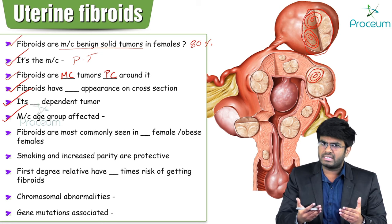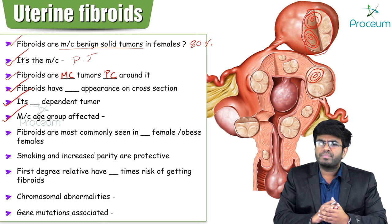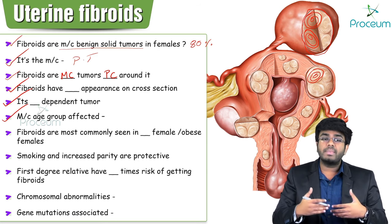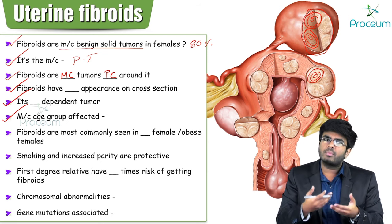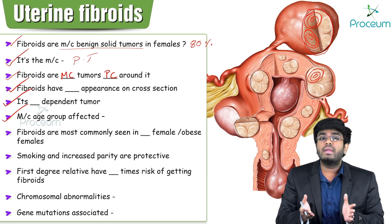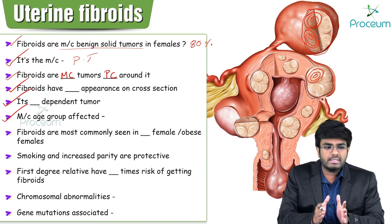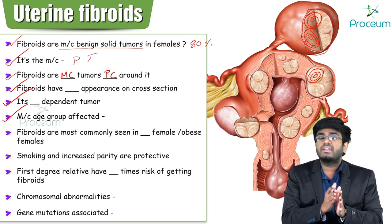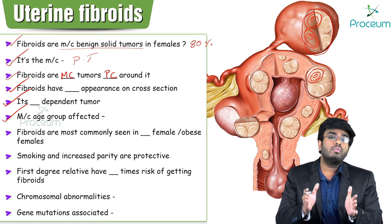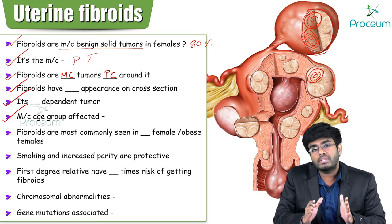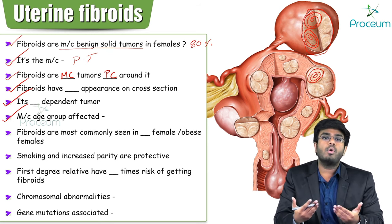If a female marries around age 25–26 but doesn't conceive for 10 years, by age 36 the uterus starts making its own baby. So if nothing is growing inside the uterus, the uterus makes its own baby — the fibroid — most commonly appearing in the 35–40 year reproductive age group.